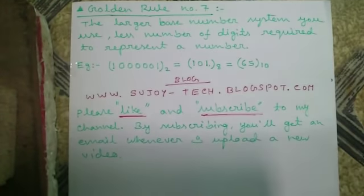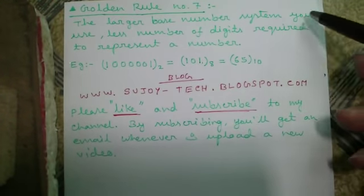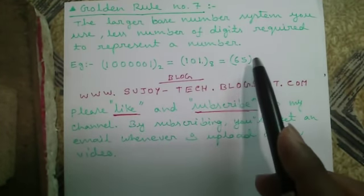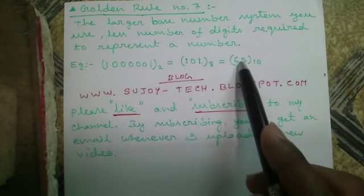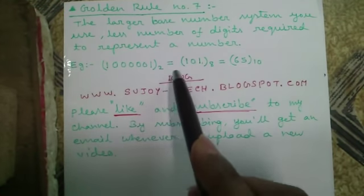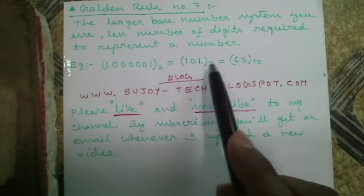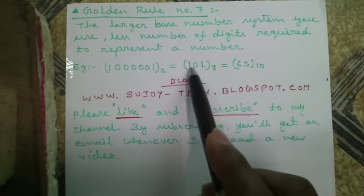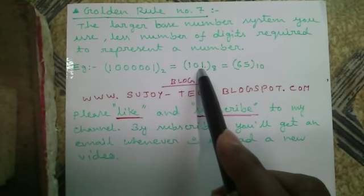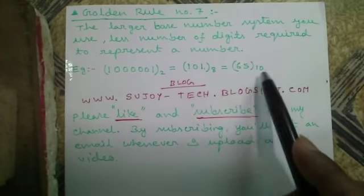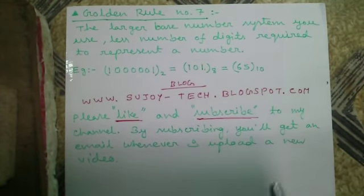Golden Rule Number 7: The larger the base number system used, the fewer digits are required to represent a number. For example, representing 65 in binary takes 7 digits — binary is the lowest base system, base 2. Converting to higher base 8 reduces to 3 digits. Converting to even higher base 10 takes only 2 digits. This is the concept.